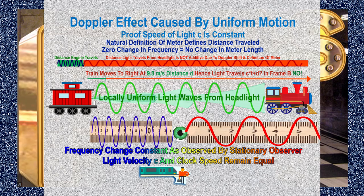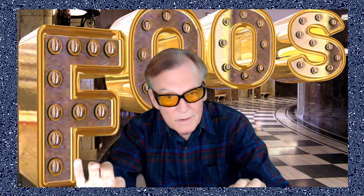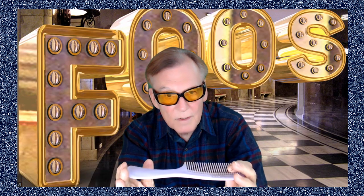The clock speed and length are not different between frames A and B as a result of uniform motion, at least not permanently. Note that there is a zero point-to-point frequency change with uniform motion. The Doppler shift is a constant shift with uniform motion — it's shifted to the blue, the wavelength is shortened, but it doesn't change after that.